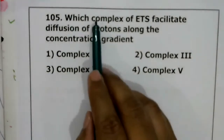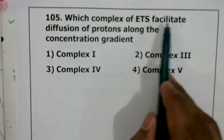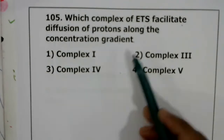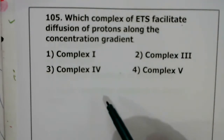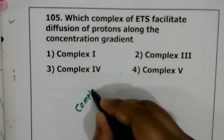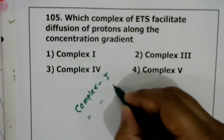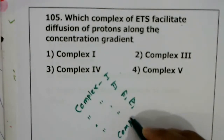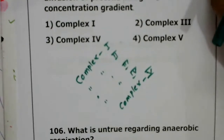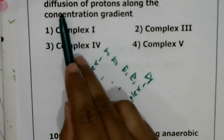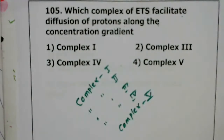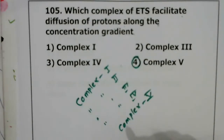Question 105: which complex of the ETS facilitates diffusion of protons along the concentration gradient? In the electron transport system we have complex I, II, III, IV, and V. The complex that facilitates diffusion of protons along the concentration gradient is complex V, also called ATP synthase.